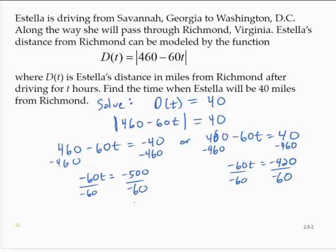So let's see, 500 over 60, so t is approximately 500 divided by 60. Let's say t is approximately 8.33 hours.